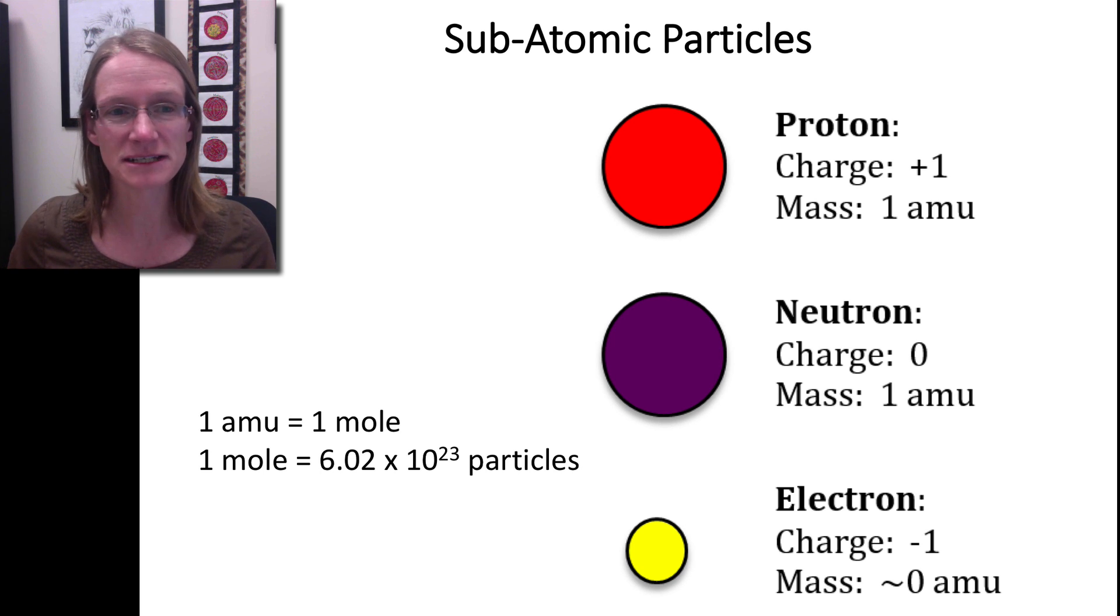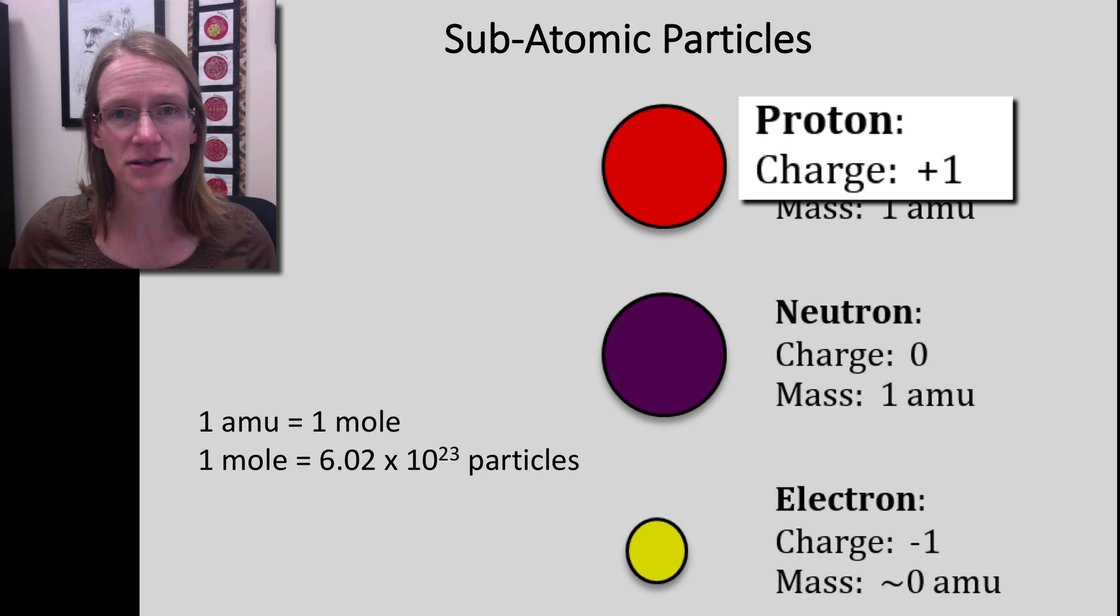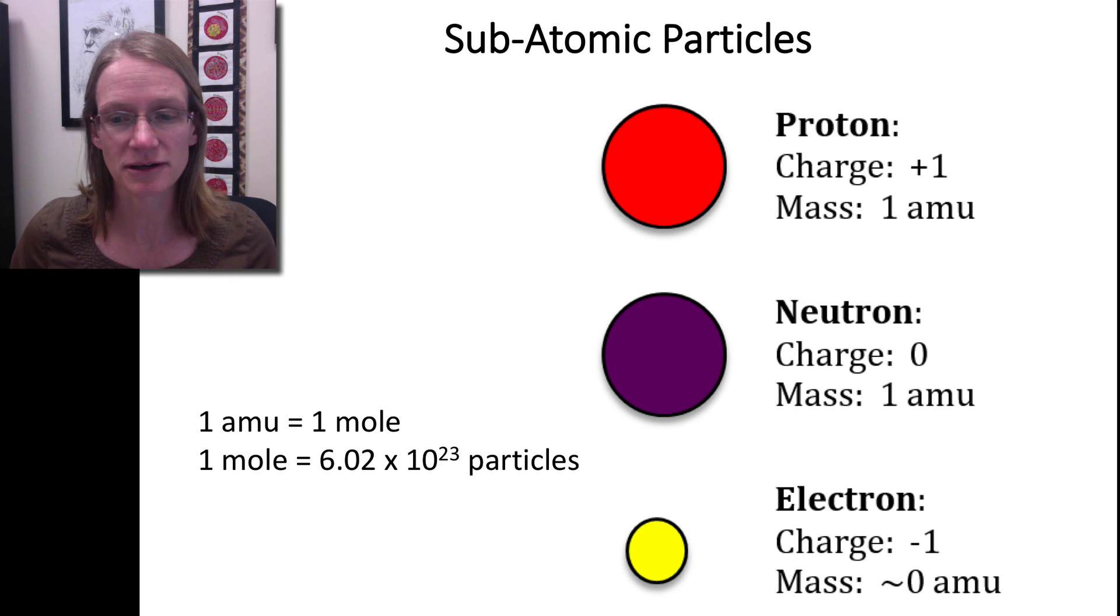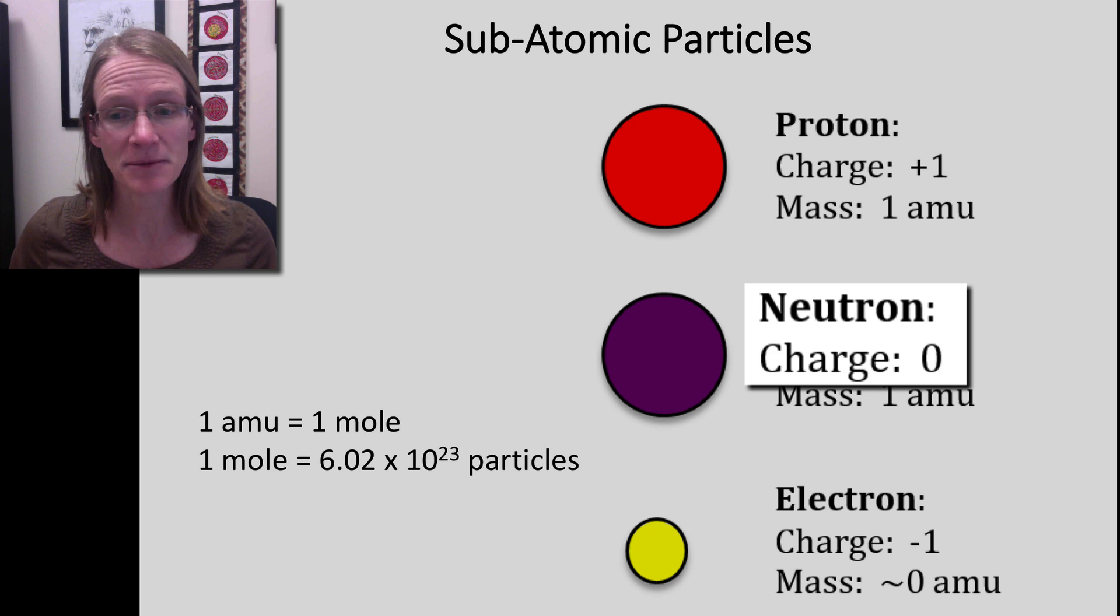Another thing we can look at when comparing these three subatomic particles is their charge. Protons are positively charged and electrons are negatively charged, so they cancel each other out. Neutrons, like their name, are neutrally charged—they have no real charge at all.